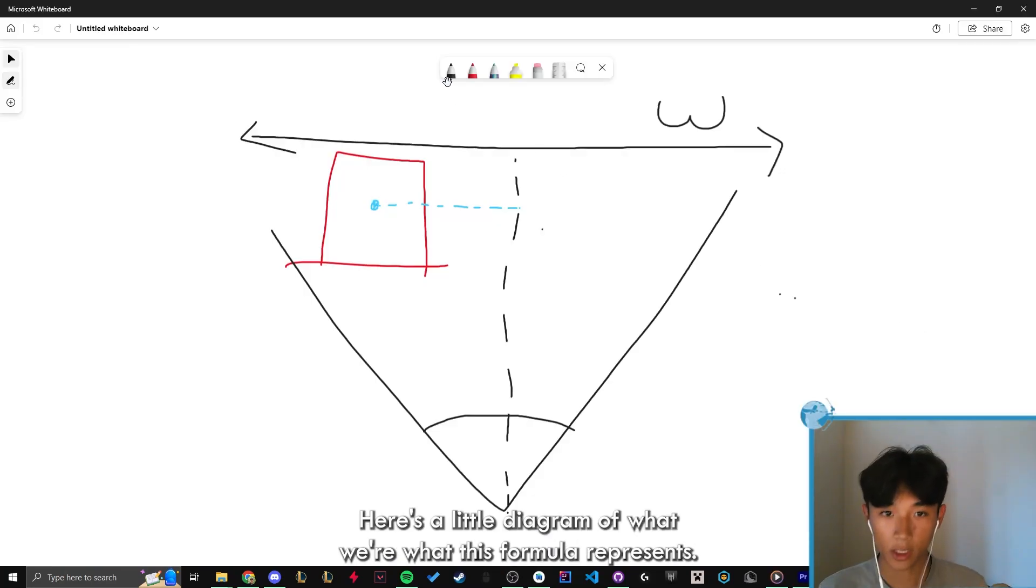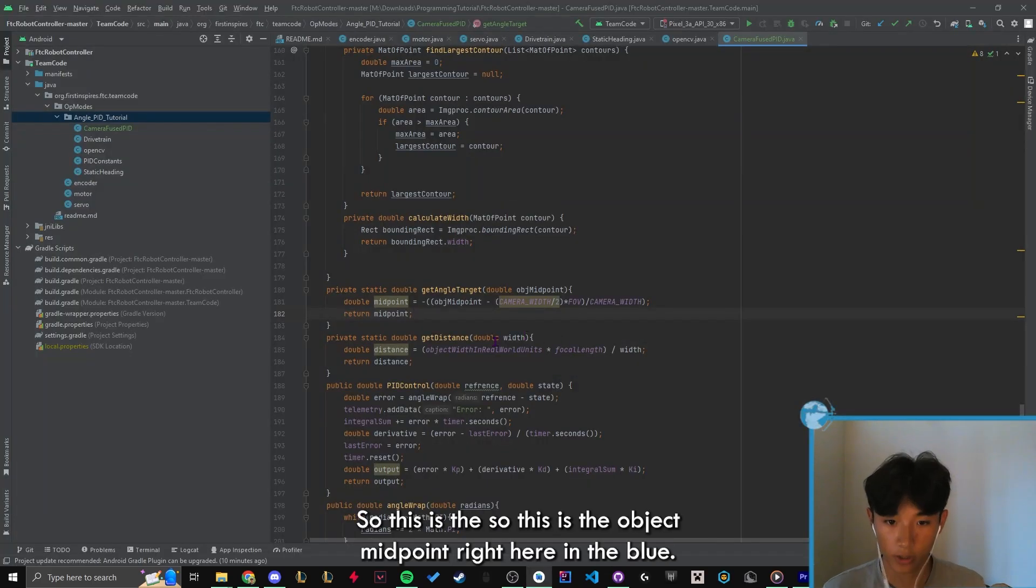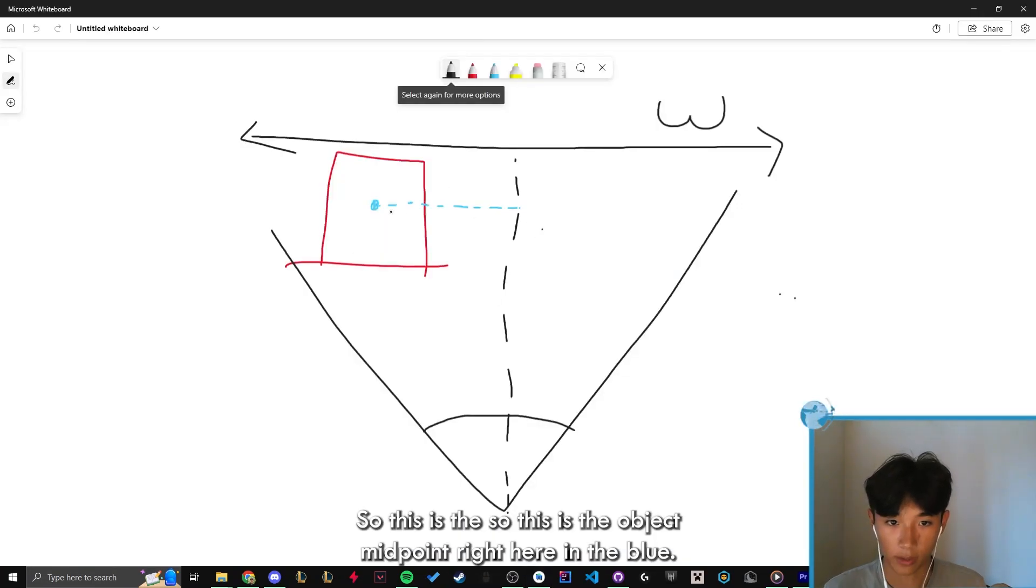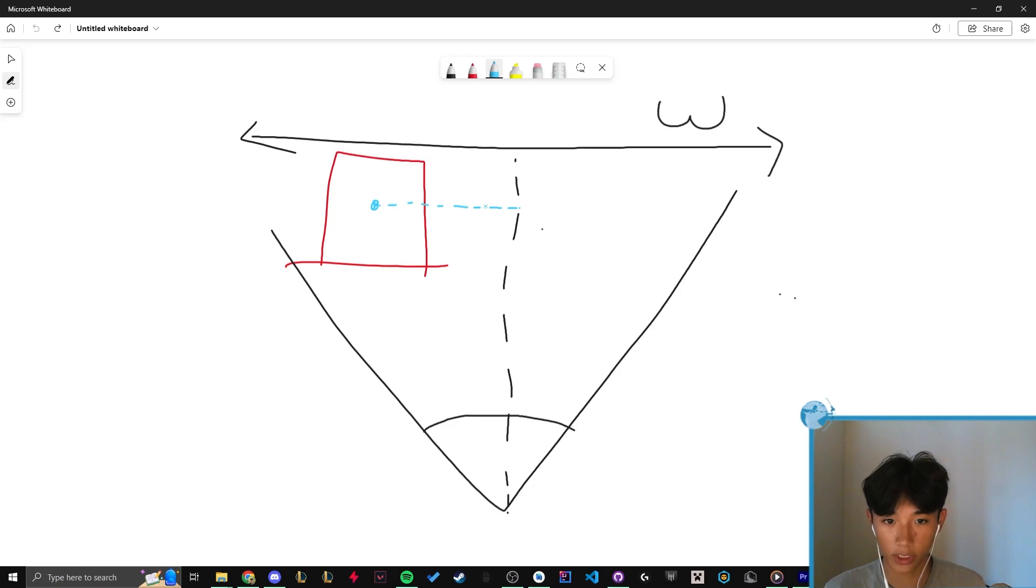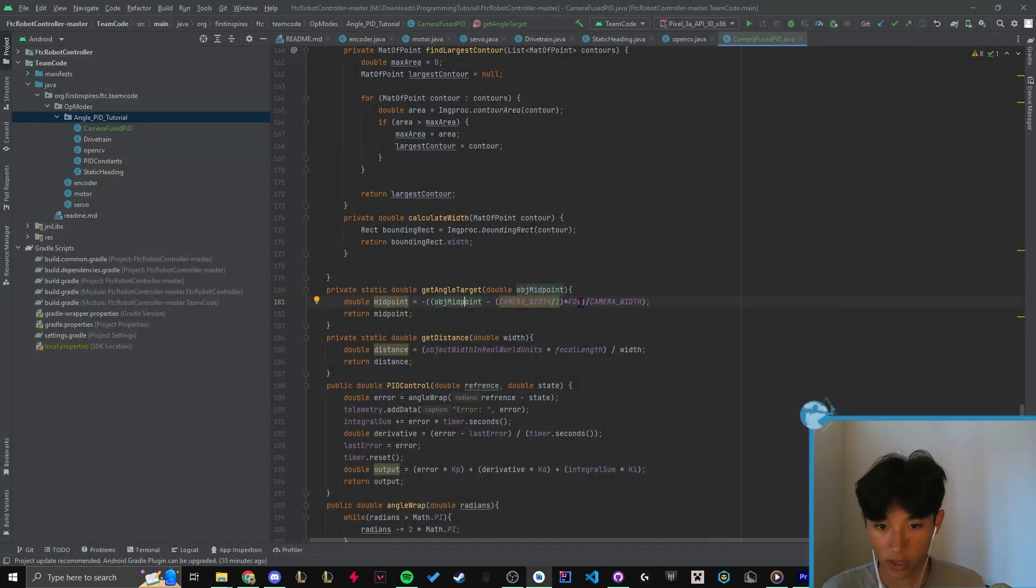Okay, here's a little diagram of what this formula represents. So this is the object midpoint right here in the blue. It just takes whatever the middle horizontal of the object is and brings it to the exact middle of whatever the camera resolution width is.